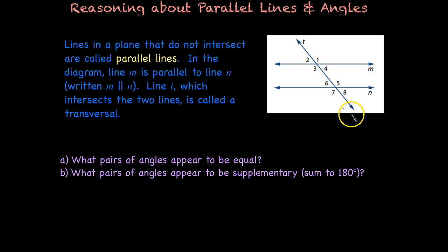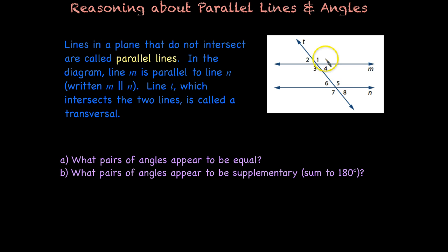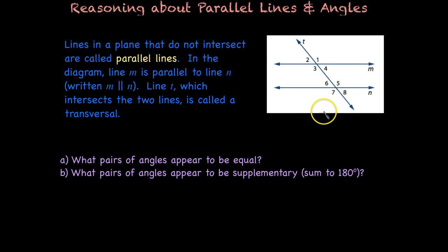Line T right here, which intersects these two lines, is called a transversal. Notice that this transversal makes these four angles here — we studied that in the last lesson — but it also makes another set of four angles down on our lower line. So now we have a total of eight angles.